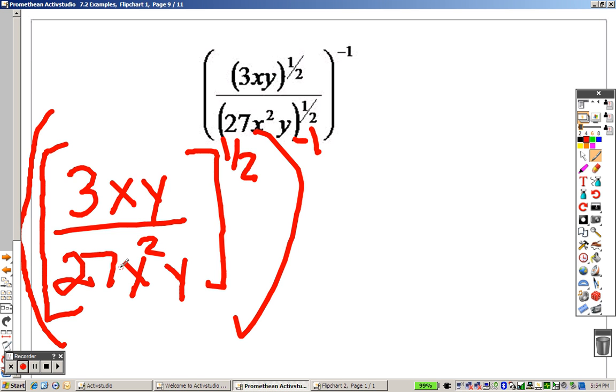So, 3 over 27, I can simplify by taking a 3 out of both those, so it's actually like saying one-ninth. I can simplify those quick. 2 minus 1 is 1, so that's just an x down there, a 1x, and it's on the bottom because that's bigger. And the y's cancel out. So, really, I have a 1 over 9x. That's it.